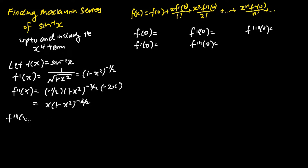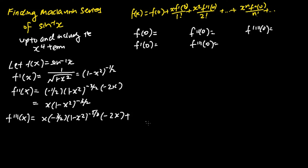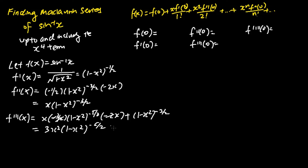Moving on, we find f'''(x) by differentiating f''(x) one time. For this part, we have to apply the product rule of differentiation, keeping x and differentiating 1 minus x squared to the power of negative 3 over 2. We get negative 3 over 2 times 1 minus x squared to the power of negative 5 over 2, times negative 2x. Then we differentiate x to get 1, and keep 1 minus x squared to the power of negative 3 over 2. Simplifying, f'''(x) equals 3x squared times 1 minus x squared to the power of negative 5 over 2, plus 1 minus x squared to the power of negative 3 over 2.